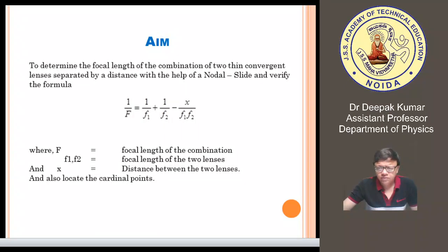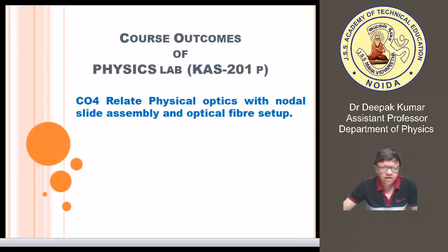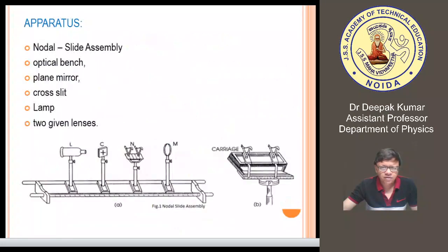Now in this particular setup we require a nodal slide assembly, an optical bench, a plane mirror, a cross slit, a lamp, and two given lenses, and we can easily identify these particular parts in this particular setup.